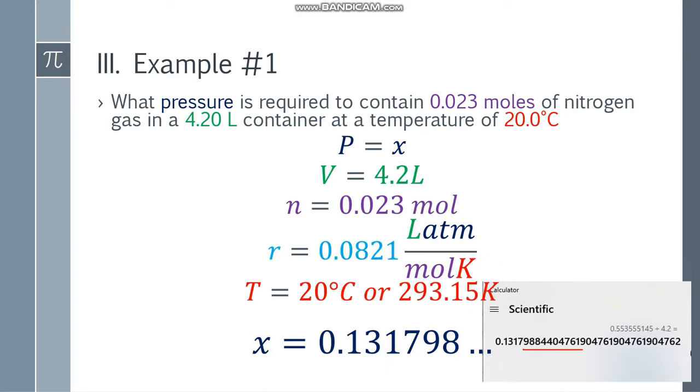Para makuha yung value ng x, divide both sides by 4.2. Pag ganito, wag mo na kayo mag-round. Itong 0.553555145, divide mo ng 4.2. Dapat diretso. Ang nakalagay sa calculator, 0.131798, and so on. Paano natin malalaman yung final answer? Ibe-base natin siya sa least number of significant figures. Let's check. Ang 0.023, may dalawang significant figures. 20.0, that will be 3. 4.20, tatlo din. Dahil dalawa ang least number of significant figures, magbilang na tayo. Simulan natin sa 1, kasi ito yung unang significant figure. 1, 3. Cut natin. Dahil 1, di tayo mag-round up. Round down lang. The final answer will be 0.13 atmosphere.